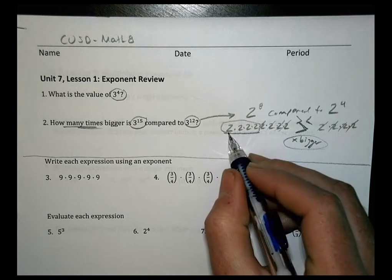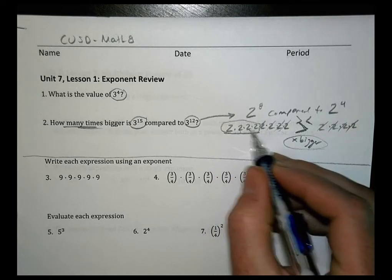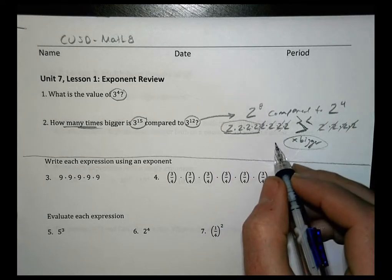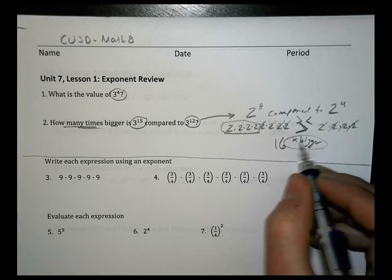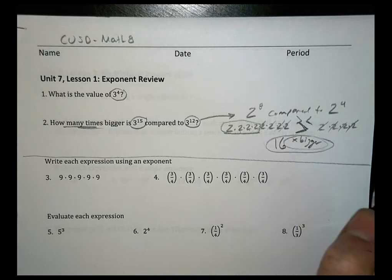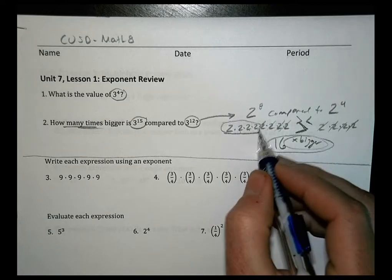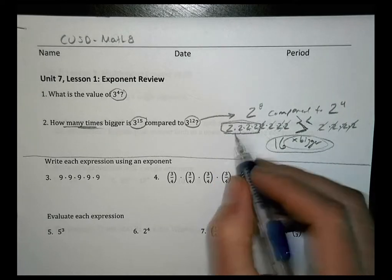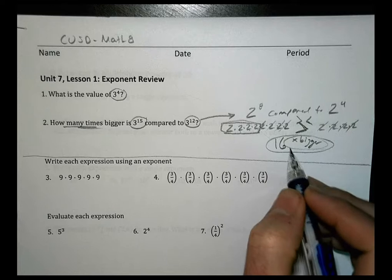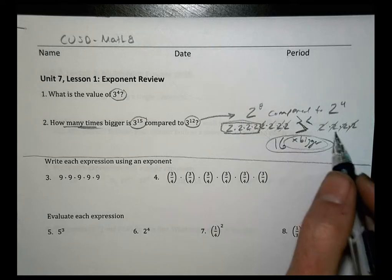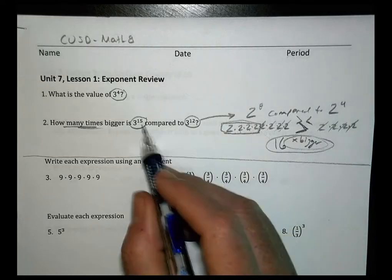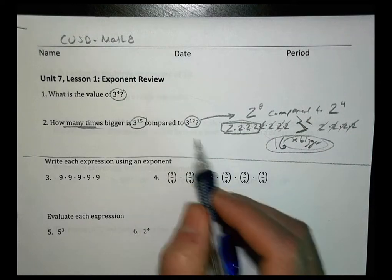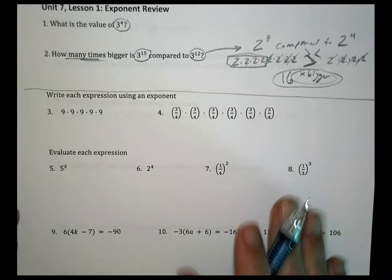I can say, well, this is 2 times 2 is 4, times 2 is 8, times 2 is 16. So this one is actually 16 times larger than that one right there. So you look at how many, what numbers are left on the other side, multiply it together to tell you how many times larger it is to the other one. That's the idea there. So you want to do that for 3 to the 15th compared to 3 to the 12th.